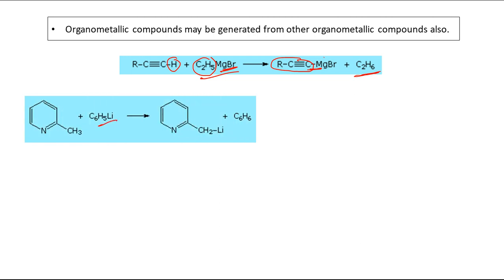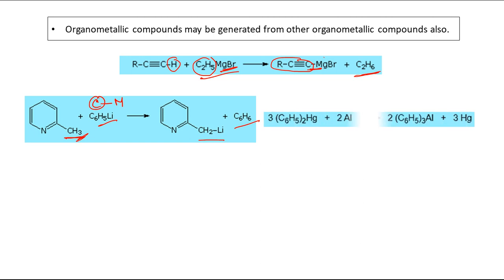Starting from PhLi (an organometallic compound) with 2-methylpyridine, the Ph group acting as a carbanion captures a proton from the methyl group, ultimately forming benzene. A new organometallic compound with a C-Li bond is produced. Another example: Ph₂Hg reacting with aluminium — the mercury is replaced by aluminium, and due to different valence the formula becomes Ph₃Al, giving a different organometallic compound.